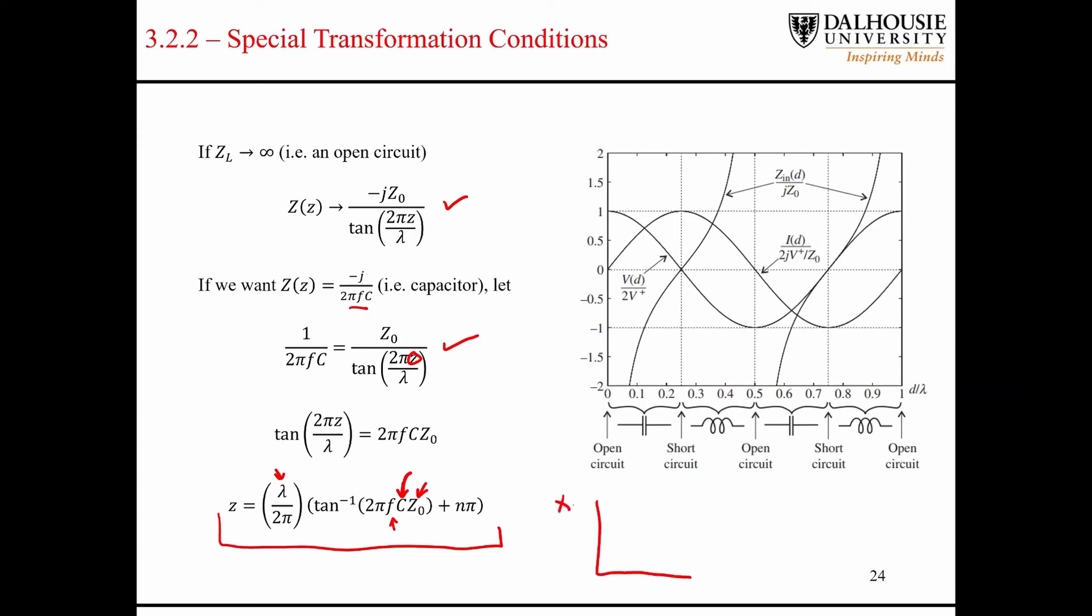So the reactance of a capacitor over frequency, ideally it would look like this, right? It falls off like 1 over x, but in reality the curve doesn't look like that. It actually comes down like this, and after a certain point the capacitor begins to look like an inductor.